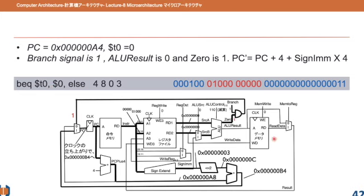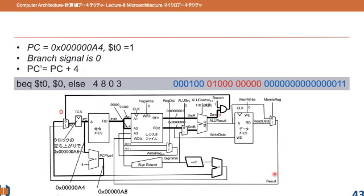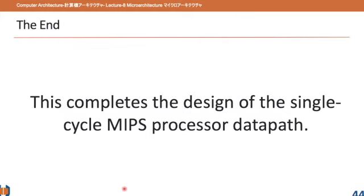That is the branch equal taken case, jumping to B4. For the not-equal case, say temporary register t0 now holds the value of temporary register 1. Source B is 0 and source A is 1, so the result is 1 minus 0 equals 1. The zero flag is set to 0, so the selector is 0, meaning the next program counter is just PC plus 4 — not the branch target. This is how branch if equal calculates the next program counter, completing the design of the single cycle MIPS processor data path. This is the end of Lecture 8.